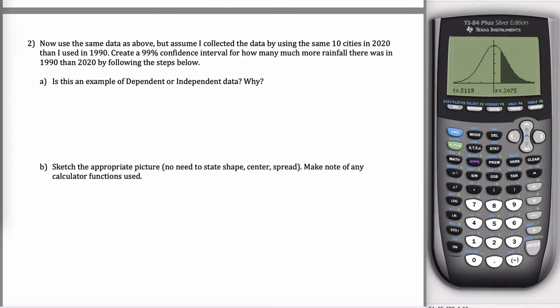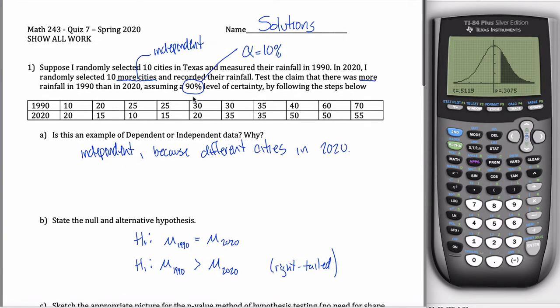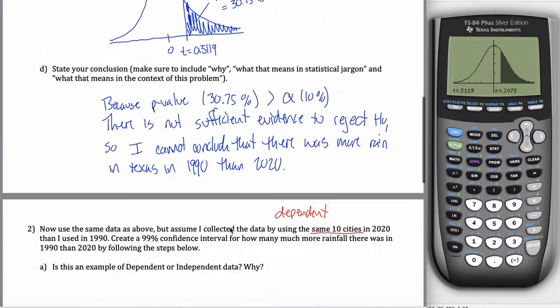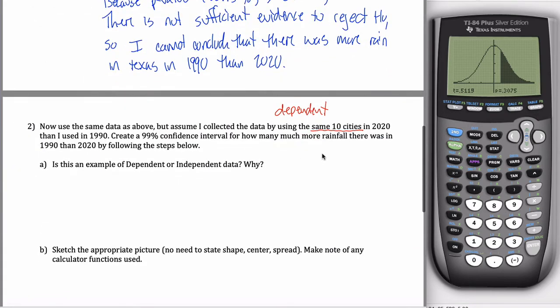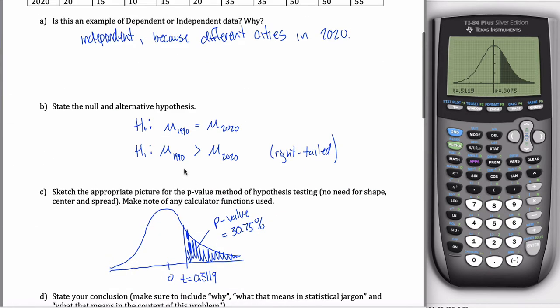Then you come down here to problem two, and it says, now, use the same data as above, but assume I collected the data by using the same 10 cities. That's important. This tells you that now it is dependent data. If I chose, what is this, in Texas? I think this is in Texas. Yeah, in Texas. So if I chose Austin as the first city, my first observation in 1990 is Austin, and my first observation in 2020 is Austin, so it makes sense to subtract those two data points.